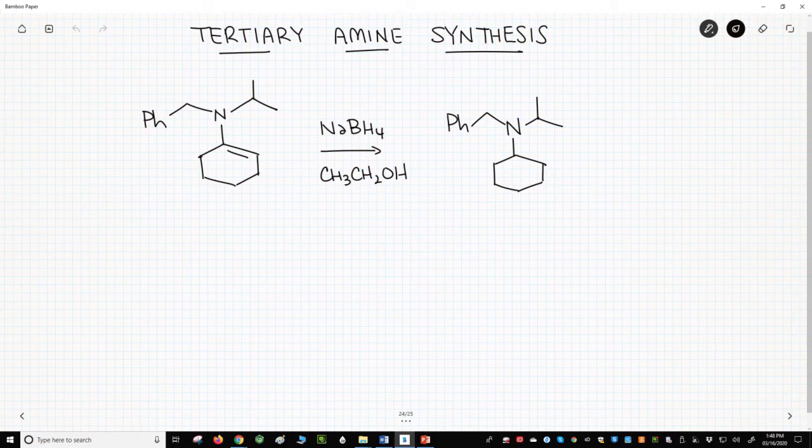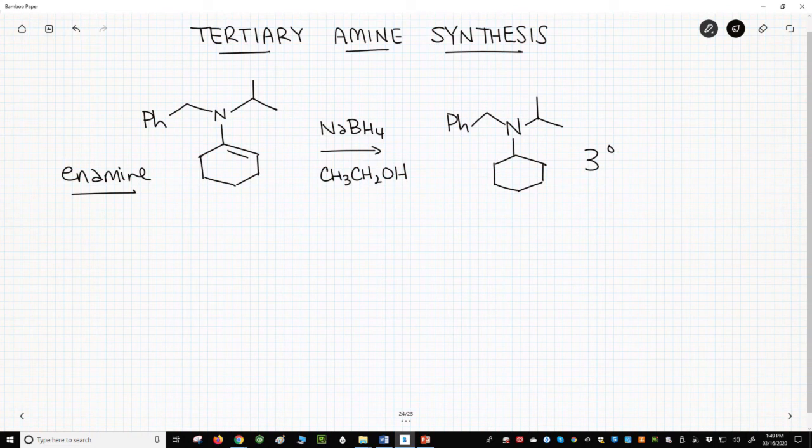On the screen, we have a reaction with a starting material. It's an enamine. Enamines are often reduced with sodium borohydride in an alcohol solvent. The product is a tertiary amine.